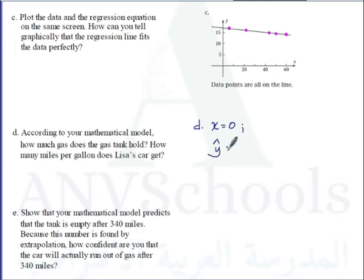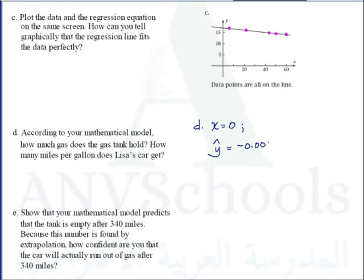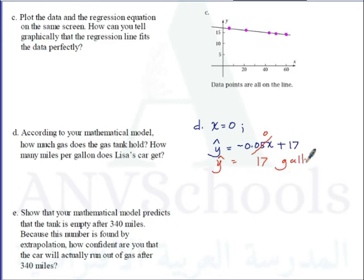The regression line equation is y-hat equals negative 0.05x plus 17. When x equals 0, the term 0.05x becomes 0, so y-hat equals 17. Therefore, initially the tank holds 17 gallons of gas.